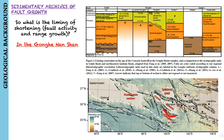In the south, along the northern margin of the Gonghe-Nanshan, similar changes attest to the onset of fault activity and range growth between 7 and 10 million years ago.